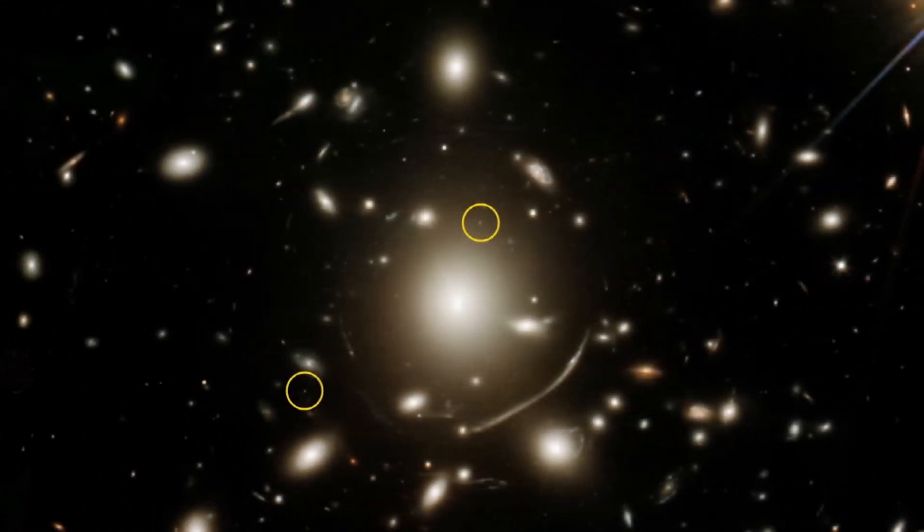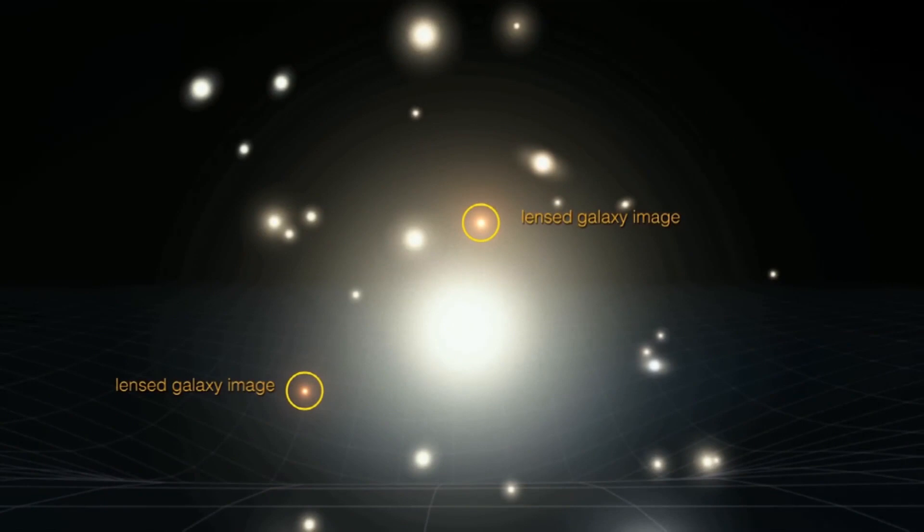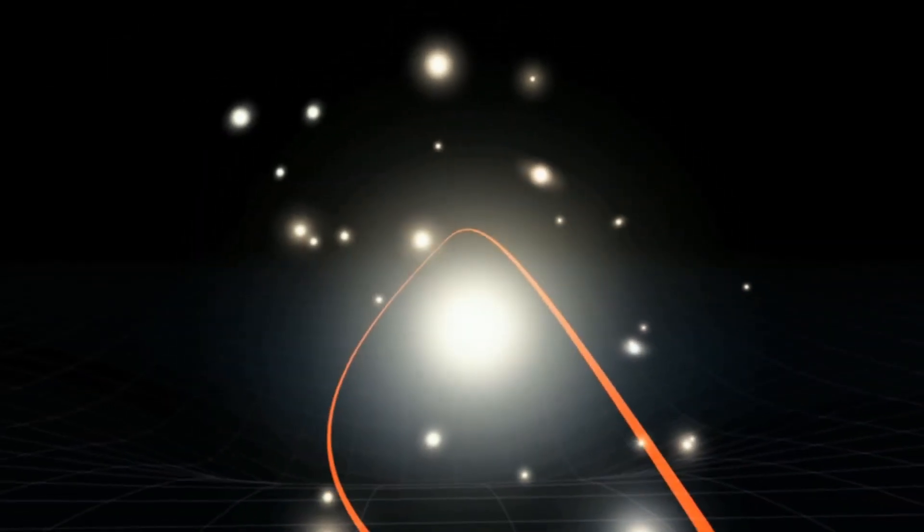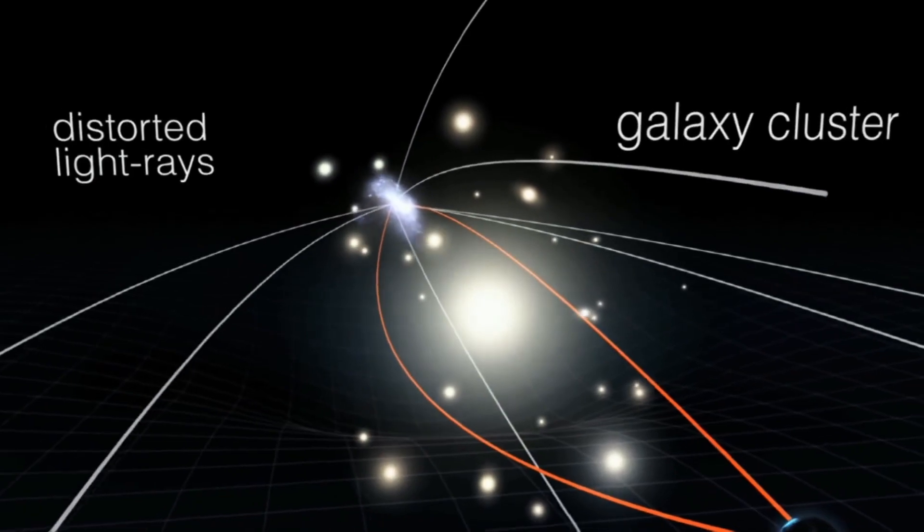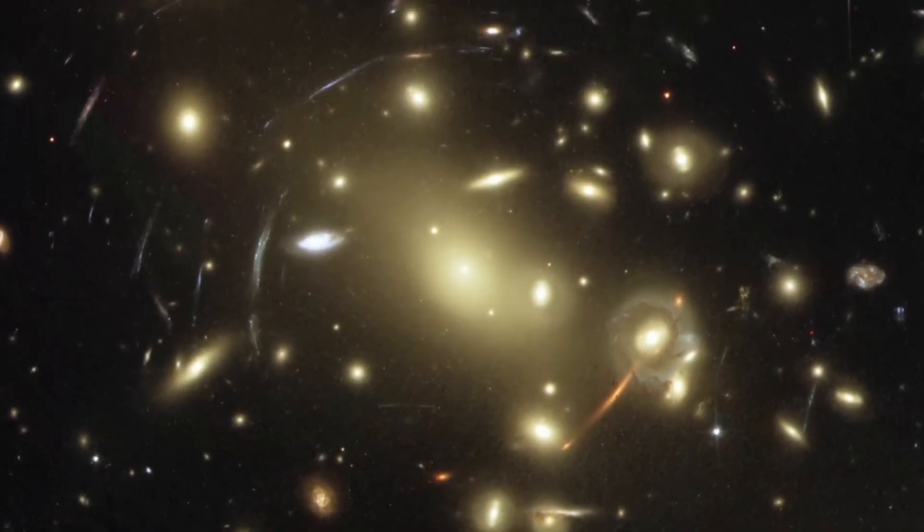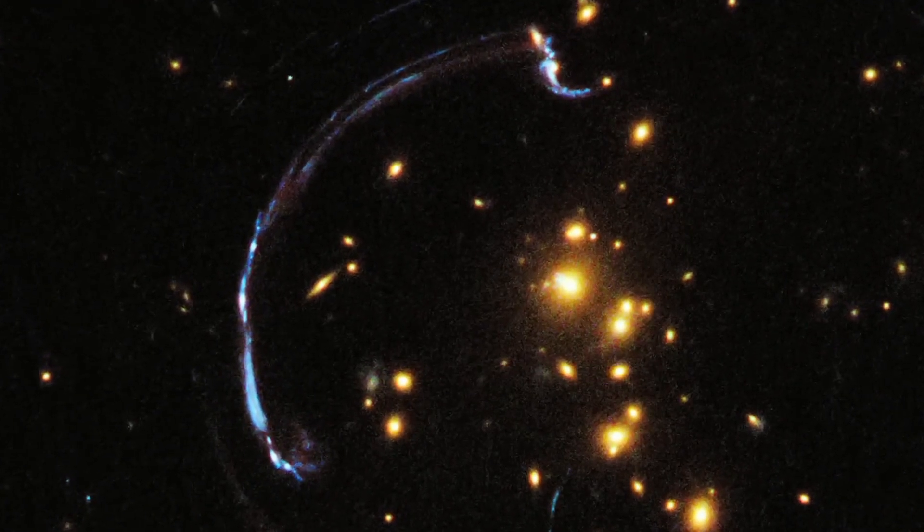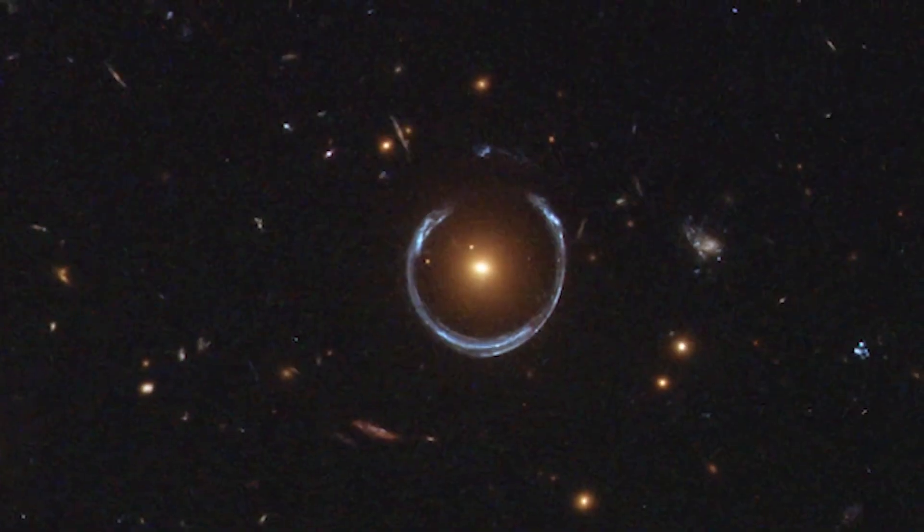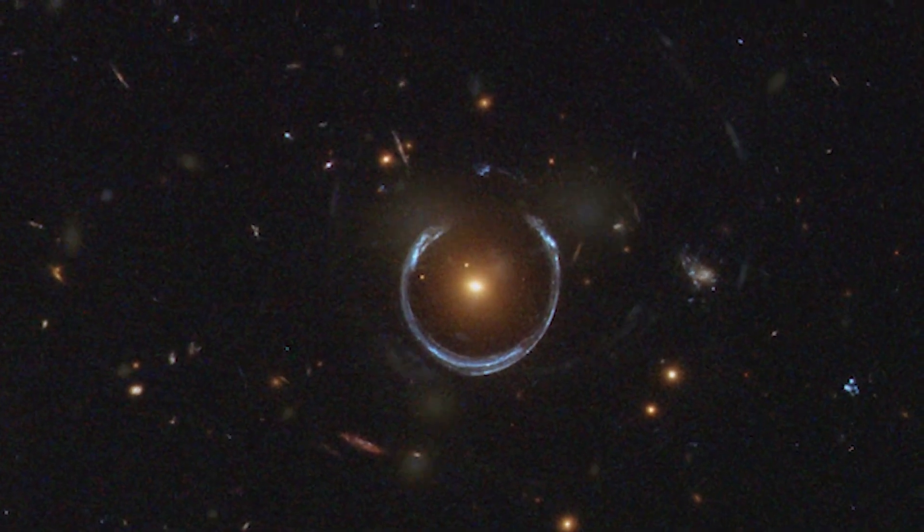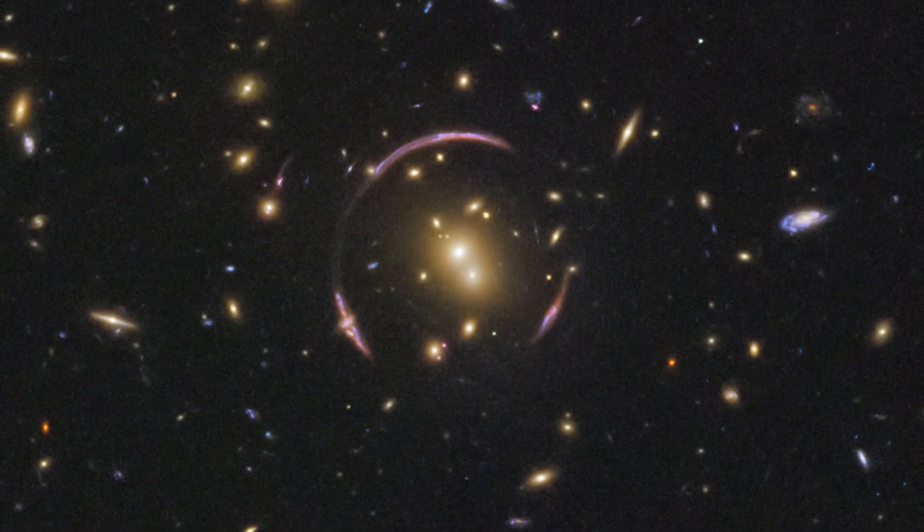How the light from the distant galaxy is distorted, amplified, or even split into multiple images depends on factors such as the mass, distance, and alignment of these two galaxies. In exceptional cases, when these two galaxies are perfectly aligned, the light from the distant galaxy can form a ring around the closer galaxy. This phenomenon is what we know as an Einstein Ring and is one of the most impressive and fascinating phenomena in cosmology.